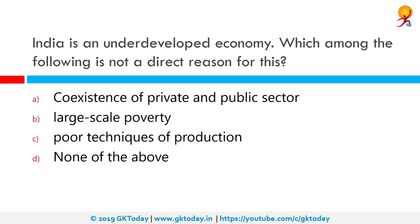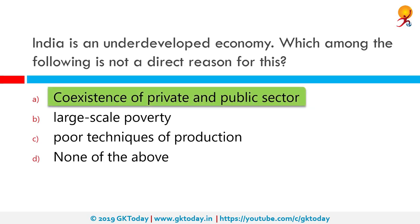India is an underdeveloped economy. Which among the following is not a direct reason for this? The co-existence of private and public sector. The co-existence of a large public sector with a big private sector has usually transformed economies into mixed ones. Industrial policies of 1948 and 1956 formulated by the Indian government made provision for such co-existence, with some basic and heavy industries being run under the public sector.